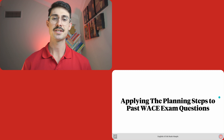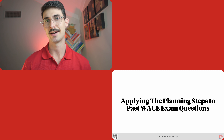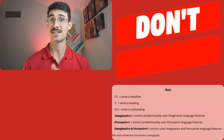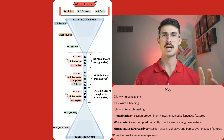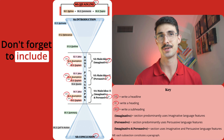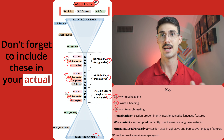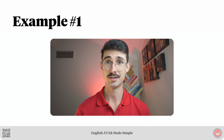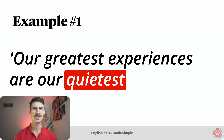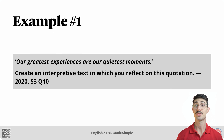Before we get there, let's apply those planning steps to some past WACE exam questions. One note before we do that: don't forget that we're using headings and subheadings for our blog posts — I don't expect you to create all of those in your plan, just don't forget to include them in your actual answer. Without further ado, here is example number one. Our question: 'Our greatest experiences are our quietest moments.' Create an interpretive text in which you reflect on this quotation.